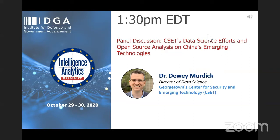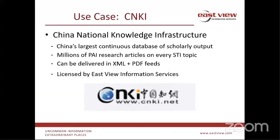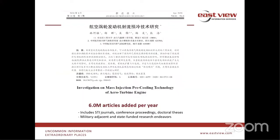This particular database is licensed by Eastview here in Minneapolis. CNKI is the use case we'll be taking a look at today. Let's take a quick look at one article, one of the millions of articles inside of this database, and start to put together what might be possible in predicting emerging technologies out of China. The title reveals that this research concerns cooling technology for aero turbine engines.